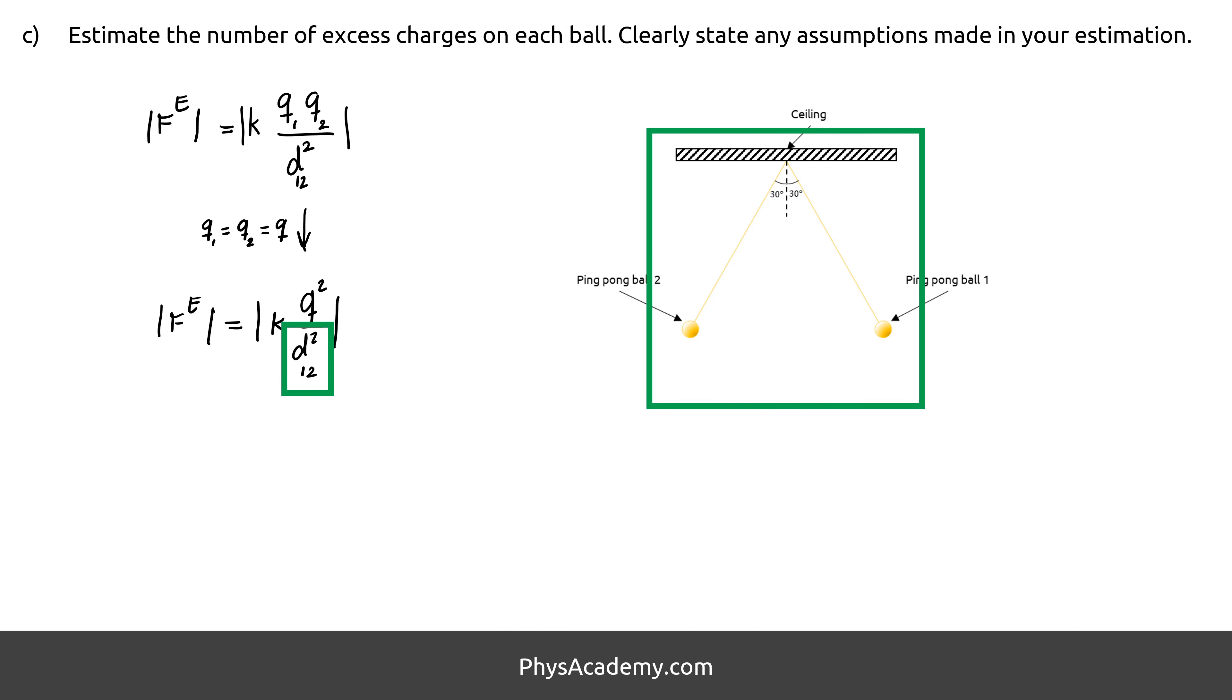To calculate the distance between two charges, we can see that the strings form an equilateral triangle by checking the system. So without further calculation, we know that the distance between the charges is the same as L, the length of the strings, or half a meter.